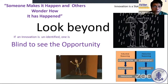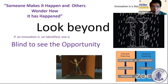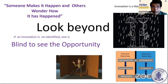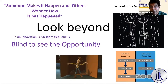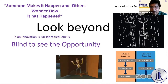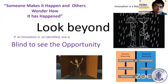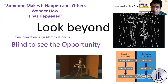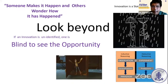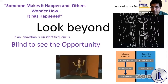If an innovation is unidentified, the person is blind to see the opportunity. There are two types of innovation. One is inductive reasoning: you observe something, identify an unmet need, and address the problem. The other is deductive reasoning: you give a student a topic, the student predicts and experiments, and comes out with a solution. In either case, you are trying to solve a problem by bringing innovation.